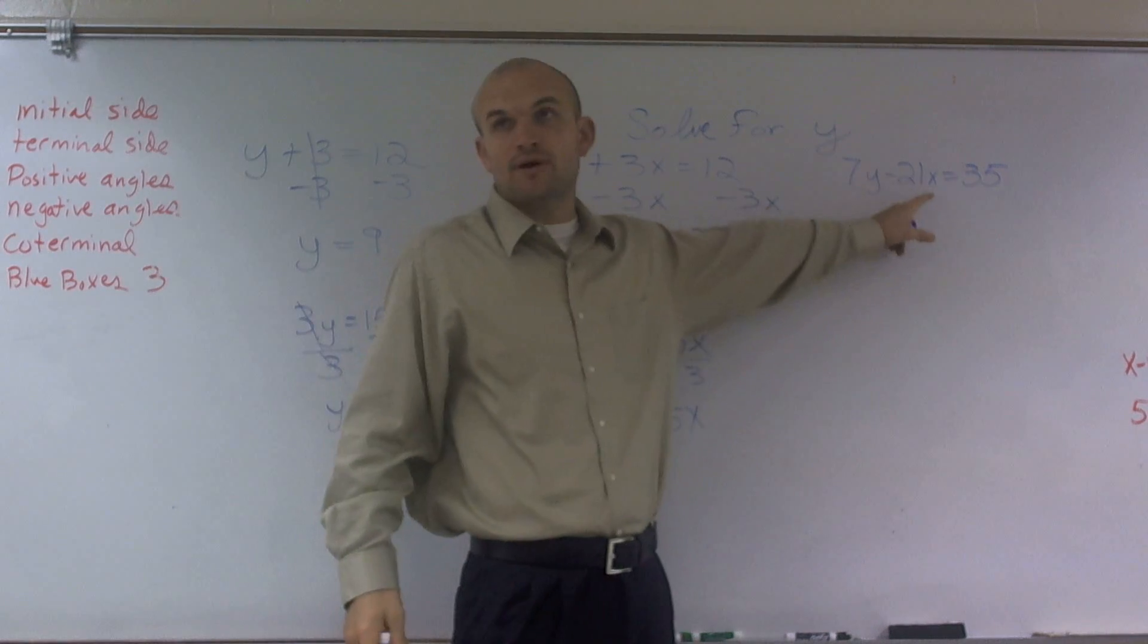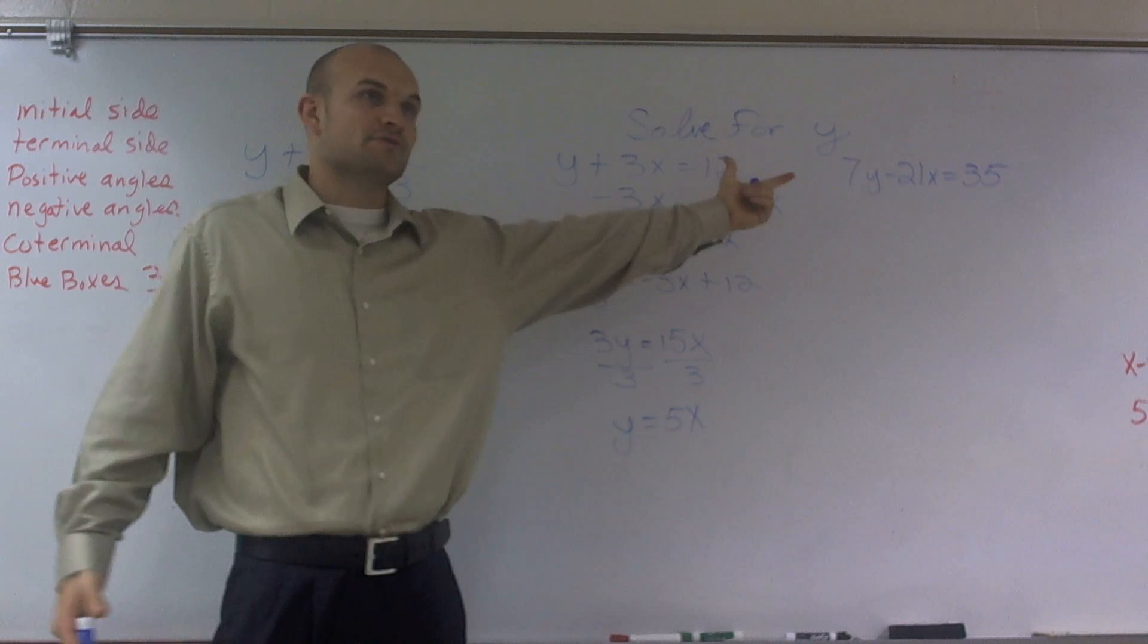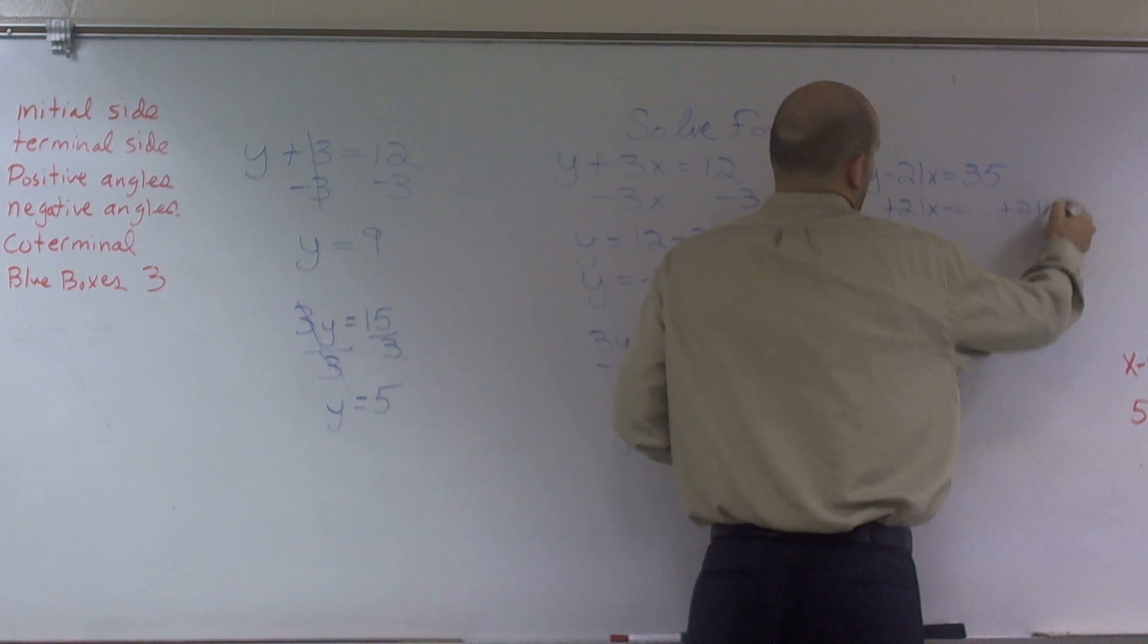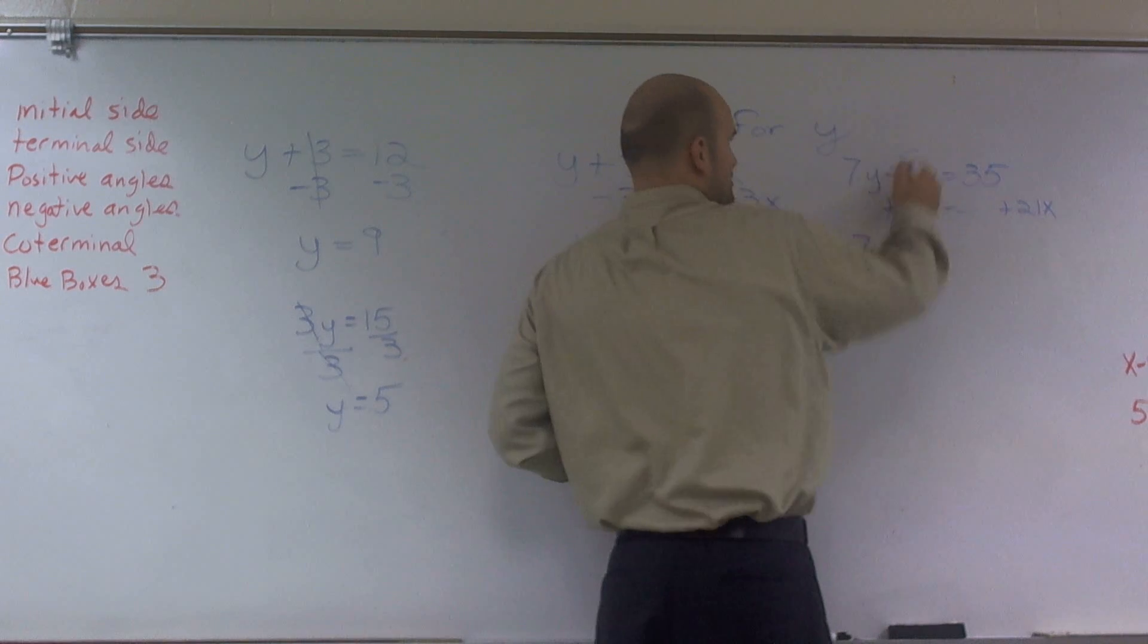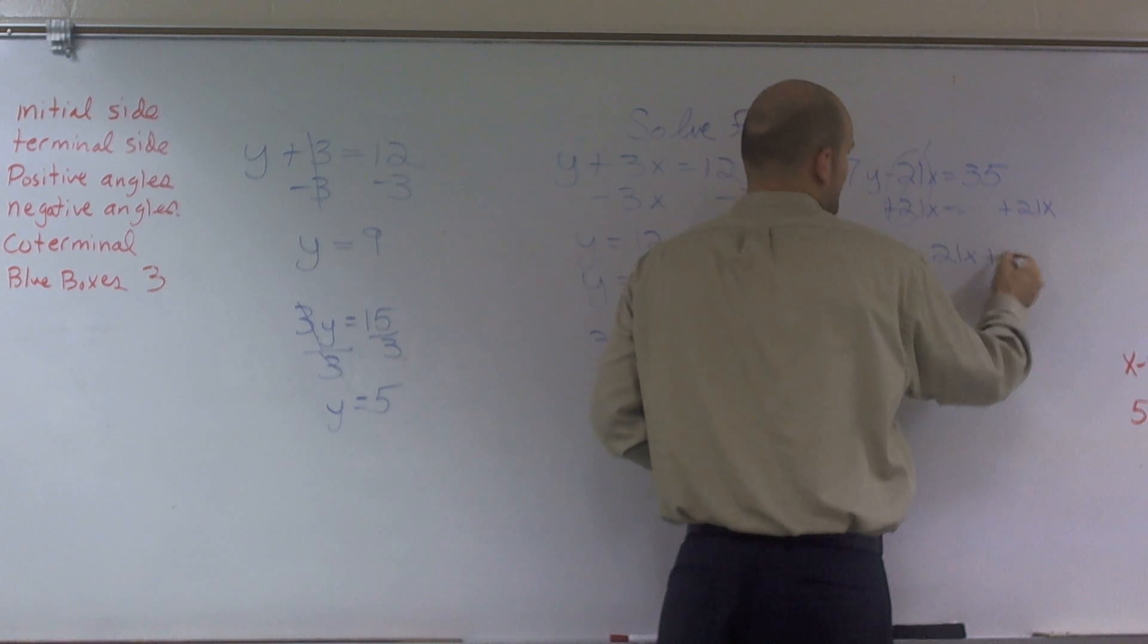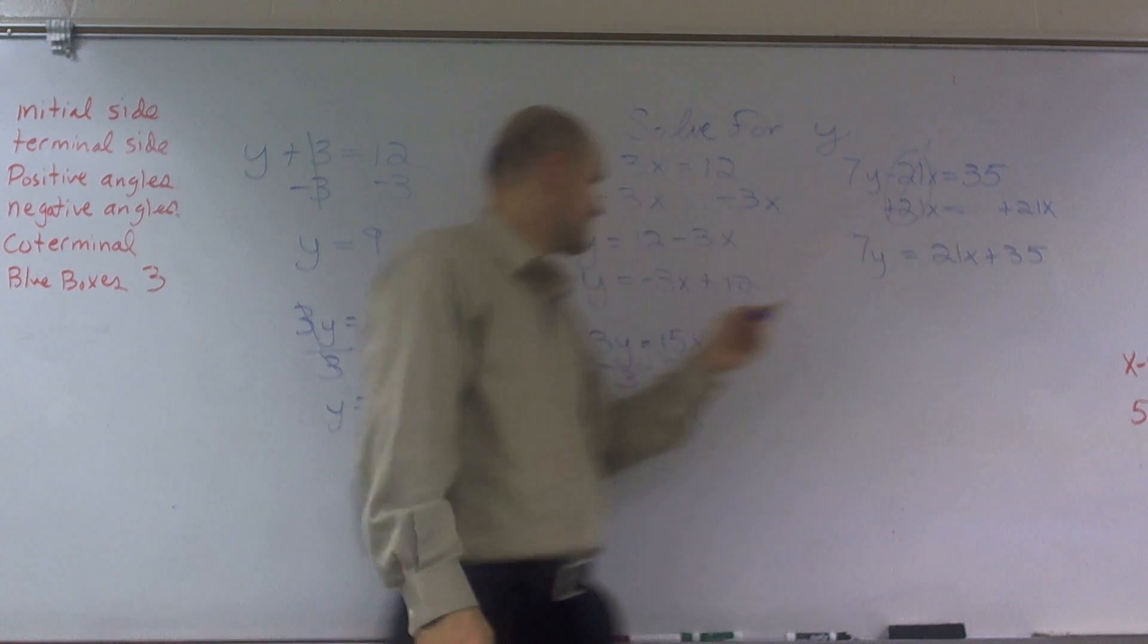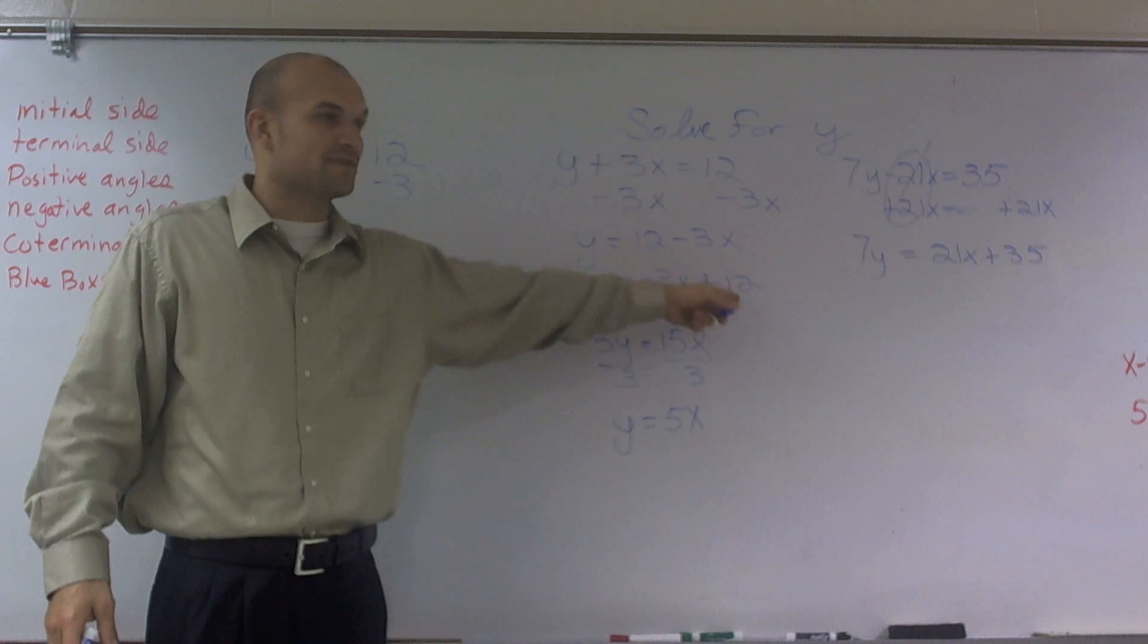So I have a minus 21x. So I can do it just like this. Here I subtracted a 3x. You can do the same thing over there. But instead of subtracting, we're going to have to add, right? So I'm going to add 21x. So therefore, now I have 7y. This is going to give me a zero. 7y equals 21x plus 35. Why is it plus 35? Because it's a positive 35. Remember, I'm rewriting this the way I told you I wanted to rewrite it. I don't want to write it like this. I want to write it with my term with the variable in front of the constant.